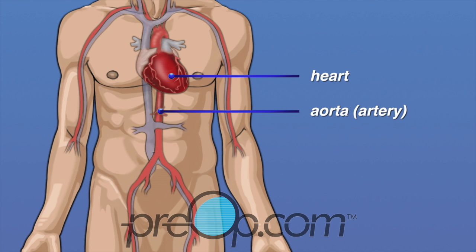The aorta is the largest artery in the body, and the blood it carries is rich with oxygen. Veins are a different type of blood vessel that carry blood back to the heart. The vena cava is the largest vein in the body.